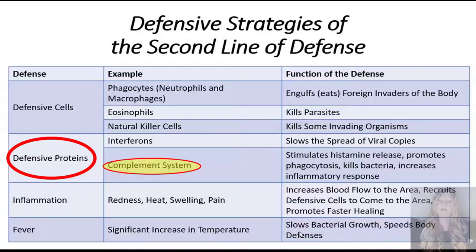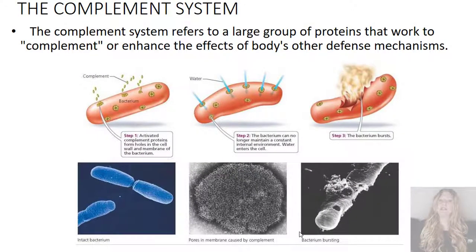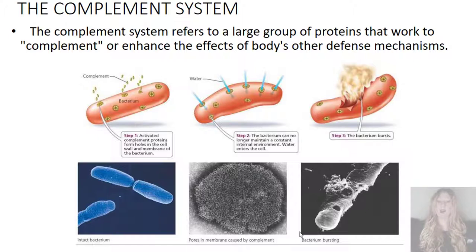The complement system refers to a large group of proteins that work together to complement or enhance the effect of the body's other defense mechanisms. One of the ways is illustrated below. Step one: activated complement proteins can form holes in the cell wall and membrane of the bacterium. Step two: the bacterium can no longer maintain a constant internal environment and water is able to enter the cell. Step three: the bacterium bursts and the pathogen is no longer a threat to the body.